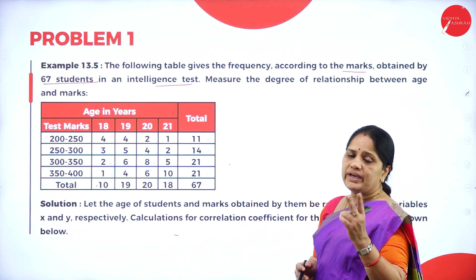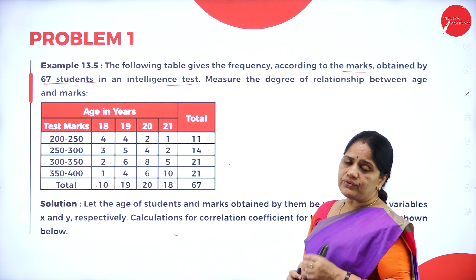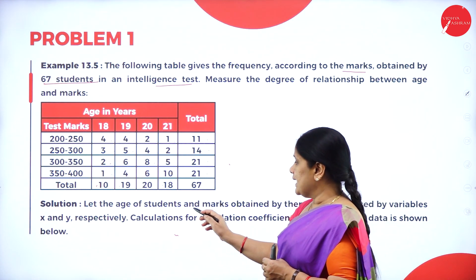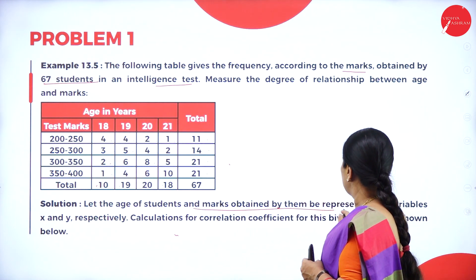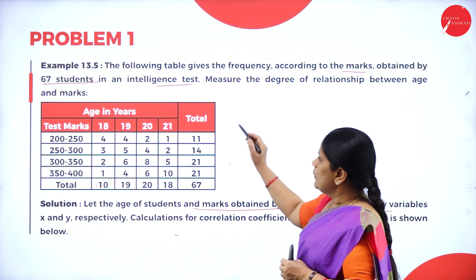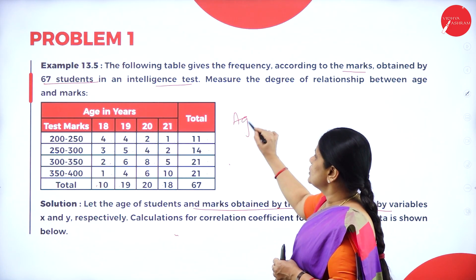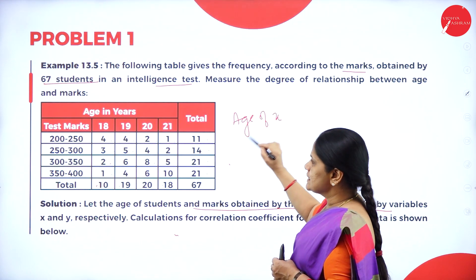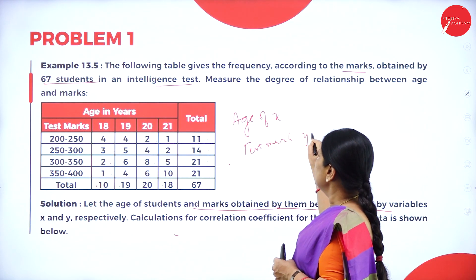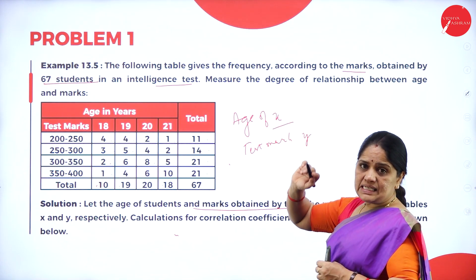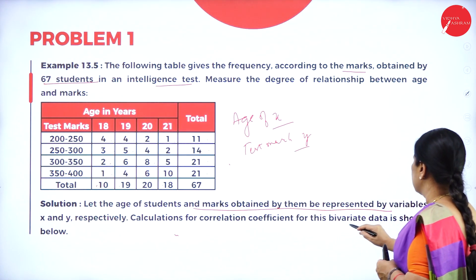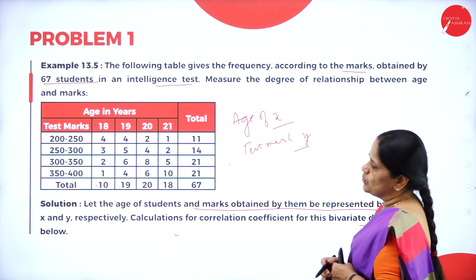We have two variables and we need to find the correlation between the age of the students and the marks scored. Let the age of students and marks obtained be represented by variables x and y respectively — age as x and test marks as y. The calculation for this bivariate data is shown below.